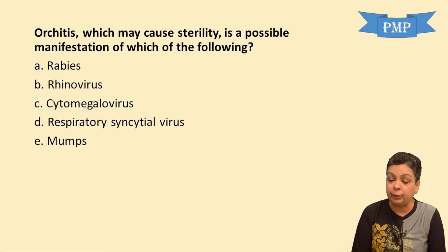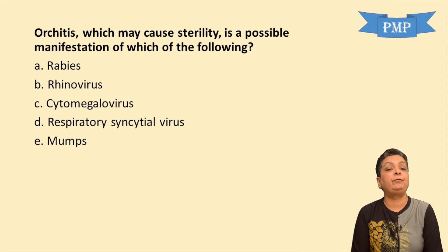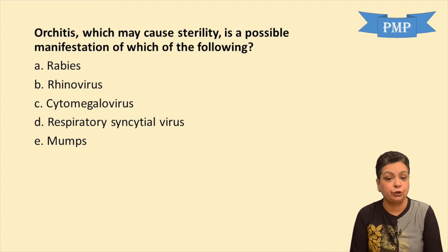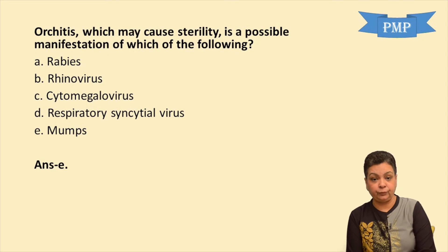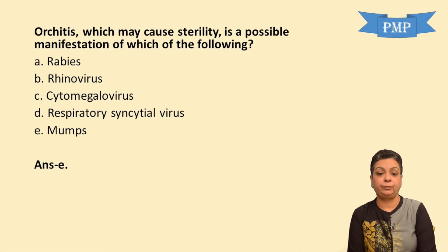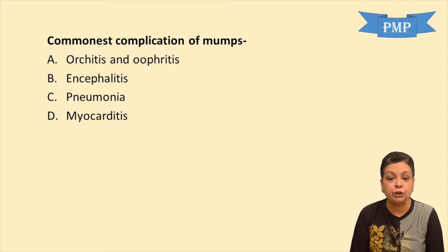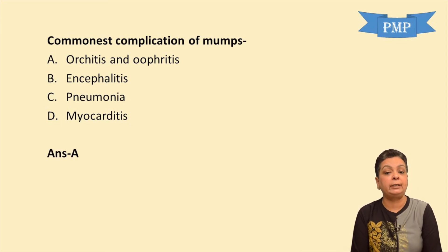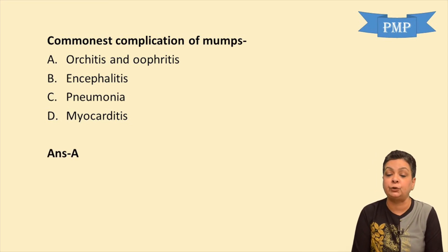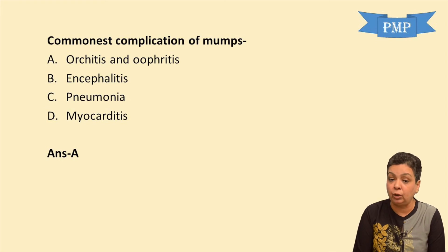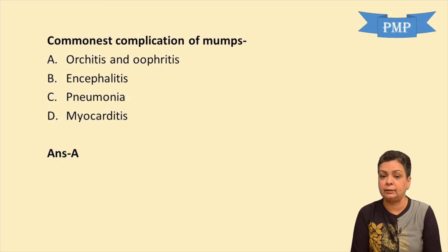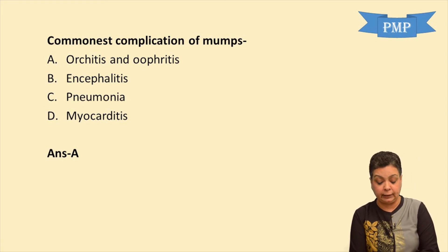Question: Orchitis which may cause sterility is a possible manifestation of which of the following? It is obviously a complication of mumps, so the answer is A. Question: Commonest complication of mumps is which of the following? The answer is A — orchitis and oophoritis. Rarer complications are myocarditis or encephalitis. Pneumonia is hardly ever seen in mumps.